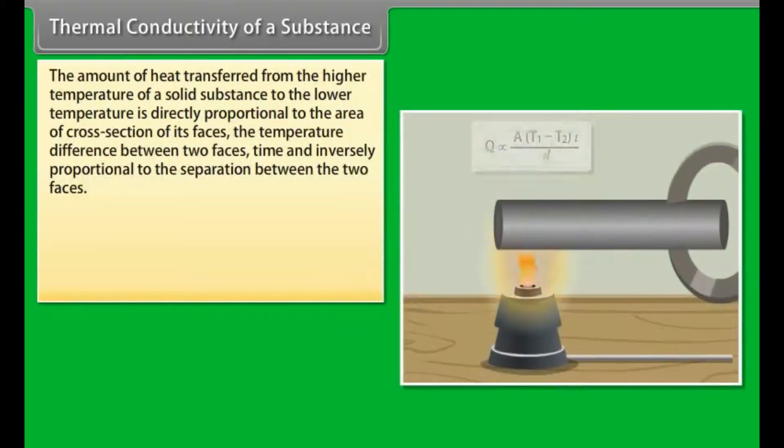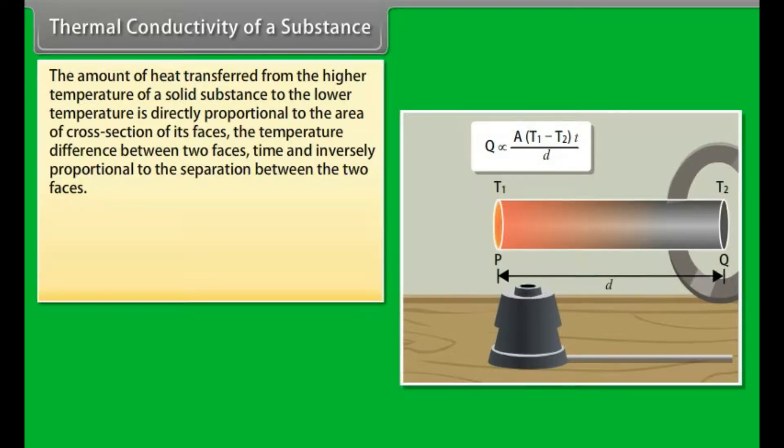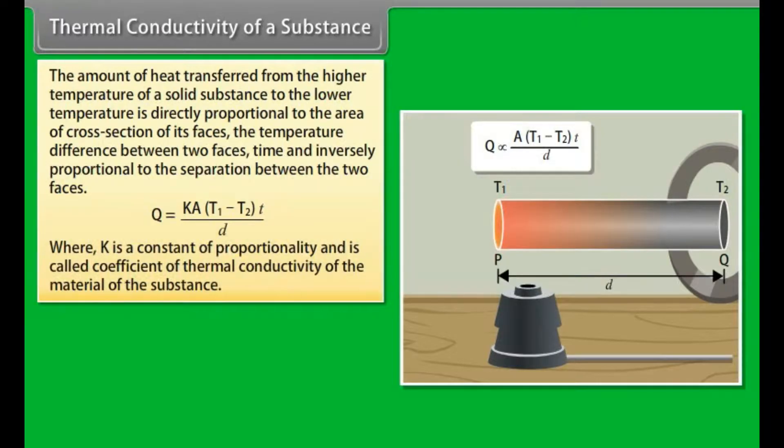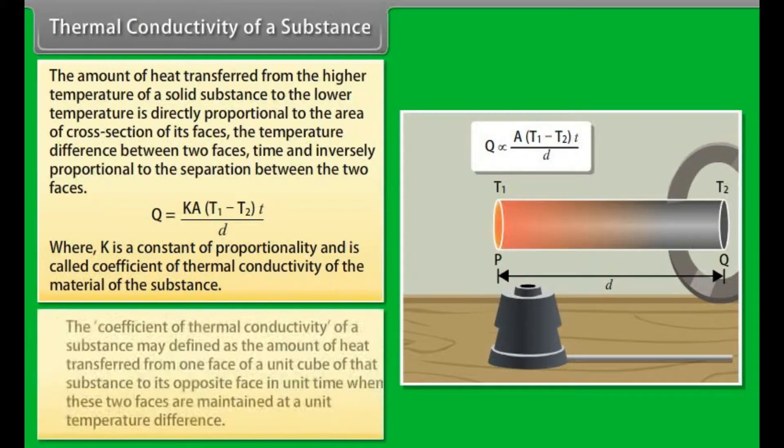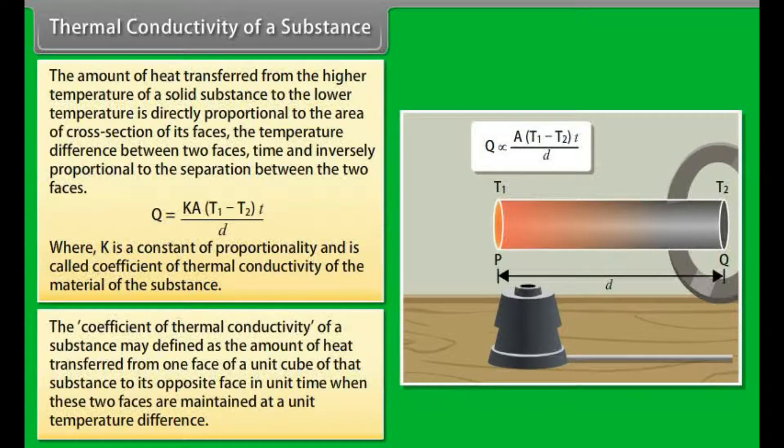Thermal conductivity of a substance. The amount of heat transferred from the higher temperature of a solid substance to the lower temperature is directly proportional to the area of cross section of its faces, the temperature difference between two faces, time, and inversely proportional to the separation between the two faces. It gives Q = K A (T₁-T₂) t/d, where K is a constant of proportionality and is called coefficient of thermal conductivity of the material of the substance. The coefficient of thermal conductivity of a substance may be defined as the amount of heat transferred from one face of a unit cube of that substance to the opposite face in unit time when these two faces are maintained at a unit temperature difference.